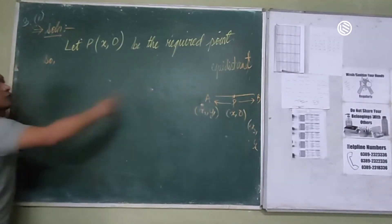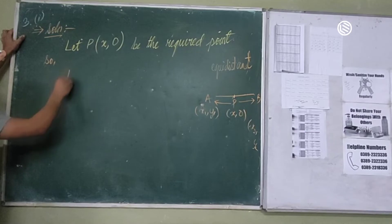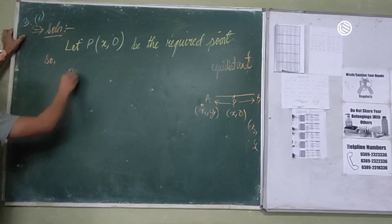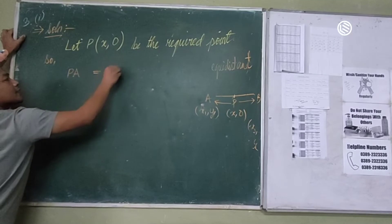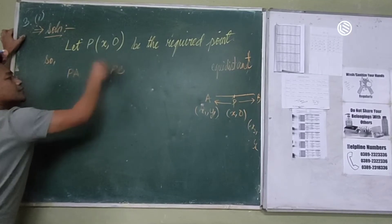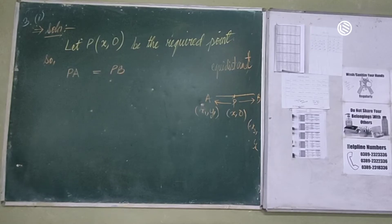Because here — let's see. PA is equal to PB. Look at the figure. PA is equal to PB. The distance will be equal.